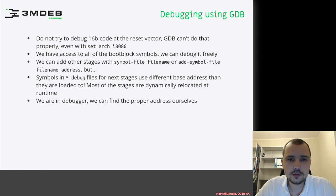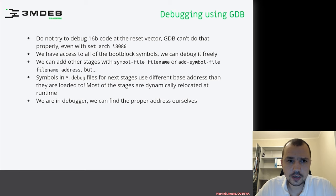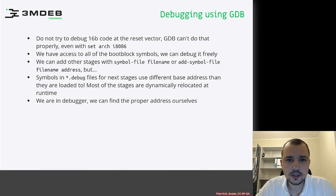We can add other stages of the boot process — like ROM stage, RAM stage, and postcar — by using 'add-symbol-file' with the filename and providing the address. There is a small caveat: symbols in debug files for next stages use a different base address than where they are loaded, because most stages are dynamically relocated at runtime. So if we want to load new symbol files at a given address, we have to figure that out ourselves.